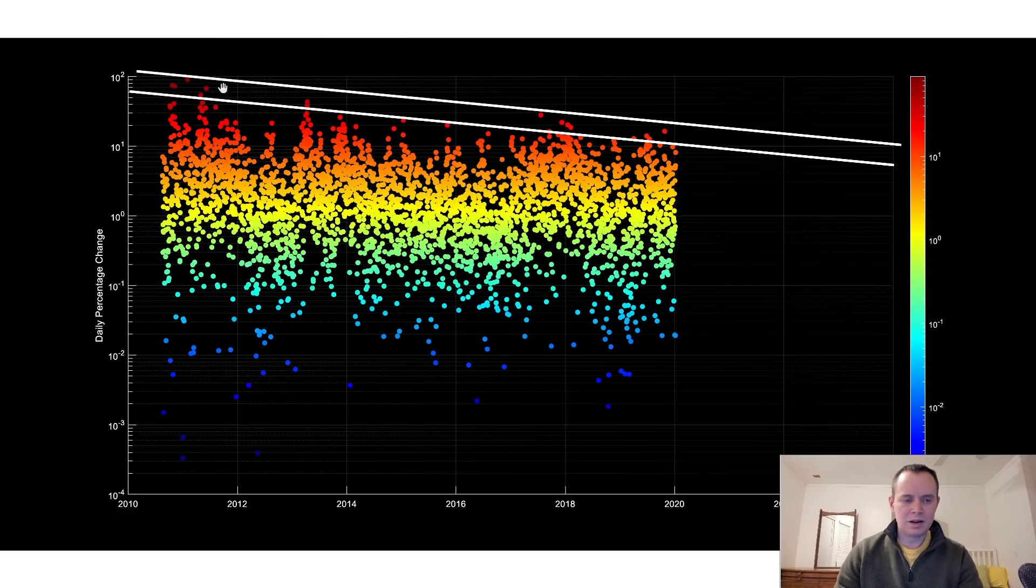You can see that it is somewhat decreasing based on these imaginary lines that I've drawn. Starting at a daily volatility back in 2010 upwards of 100% almost down to 20 to 25% today. So you can see it has been decreasing.